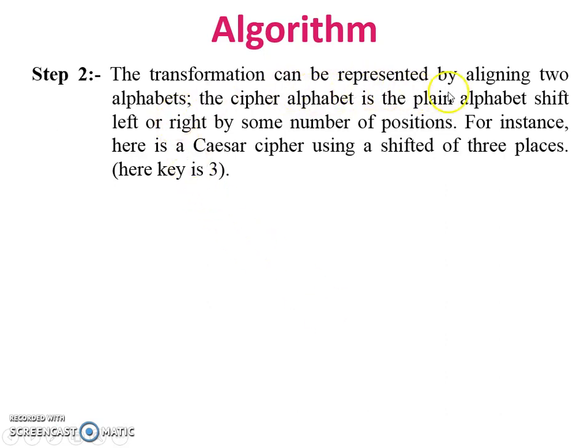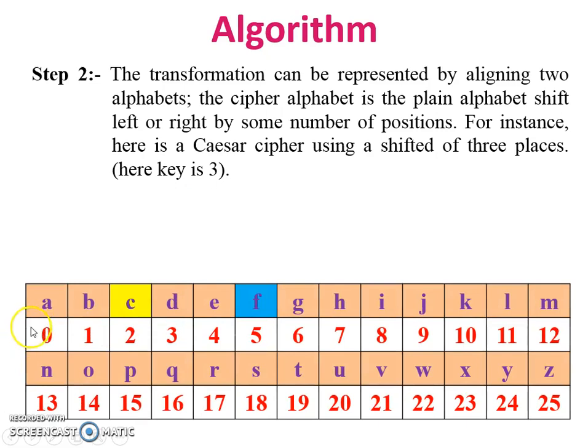Step 2: The transformation can be represented by aligning two alphabets - the cipher alphabet is the plain alphabet shifted left or right by some number of positions. For instance, this is the table as per the first step: a = 0, b = 1, up to z = 25. My plaintext is C and key is 3. As per the plaintext and key, I encrypt my plaintext C with the help of key, so the generated ciphertext is F.